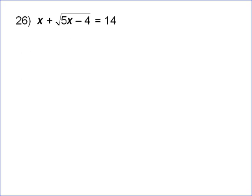In this problem, we're solving an equation that has a radical in it. Whenever you do this, you always want to try to isolate the radical. So the first thing I'm going to do is try to get the square root by itself by subtracting x. That'll give me radical 5x minus 4 equals 14 minus x.